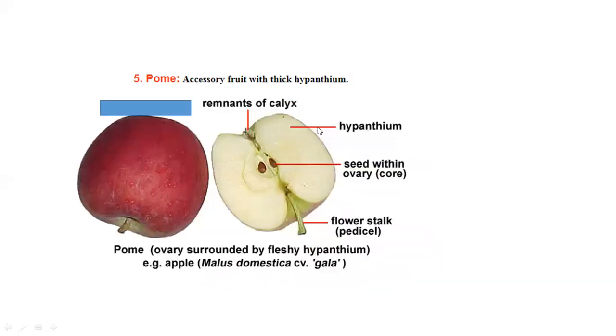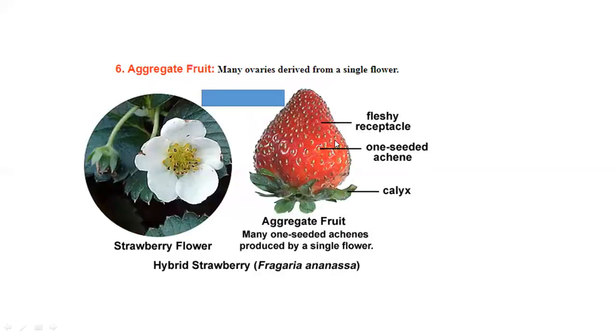Pome is seen in apple. This is a false fruit or hypanthium. The seeds are within the ovary in the center, and the fleshy part is the flower stalk. Example: Malus domestica, the apple.